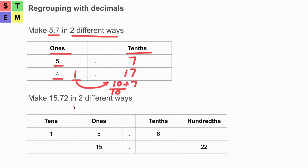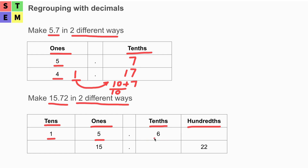Let's try another example. We will make 15.72 in two different ways. In the first row, we have the tens place, ones place, tenths, and hundredths. At the tens place we have one, and at the ones place we have five, giving us 15. At the tenths place we have six, but the original number has seven at the tenths place — so what happened to the additional one?